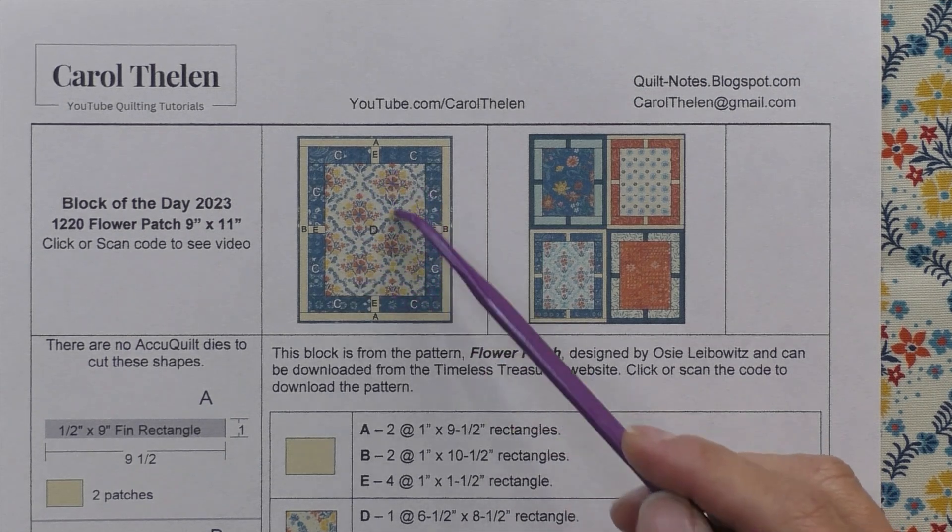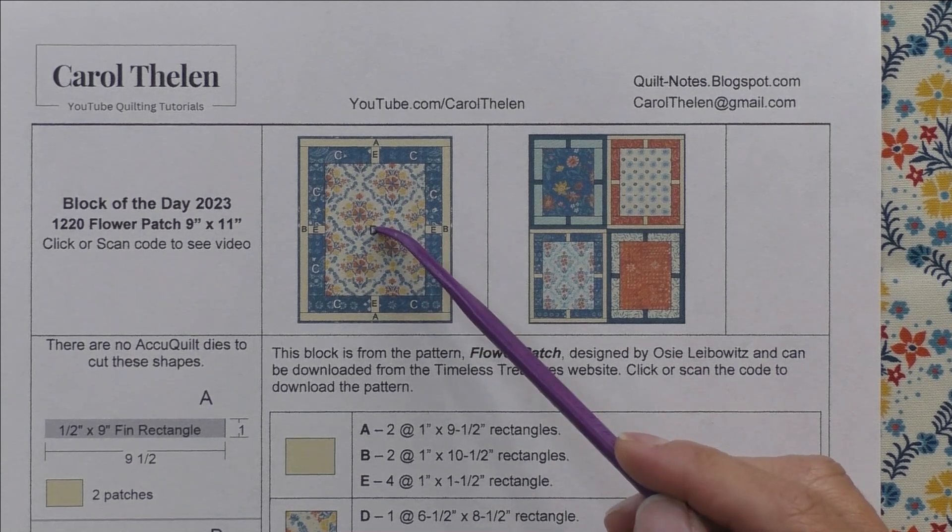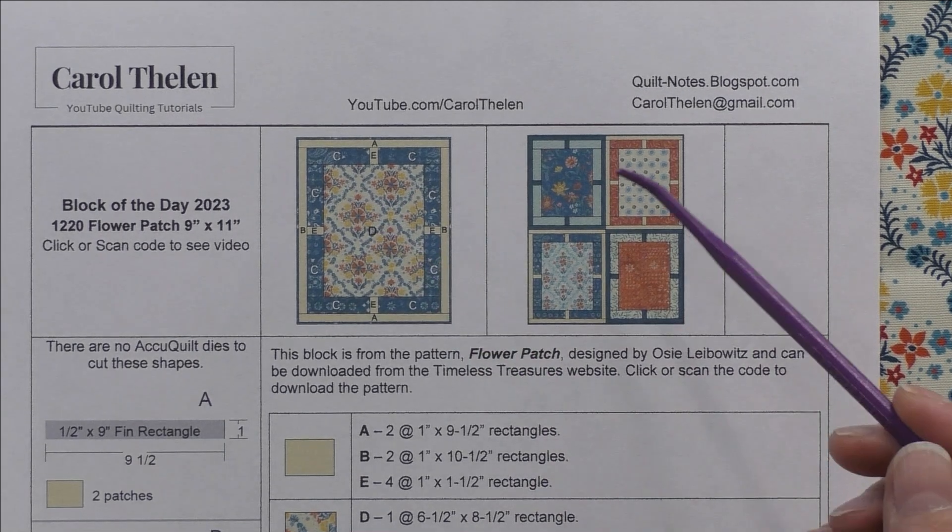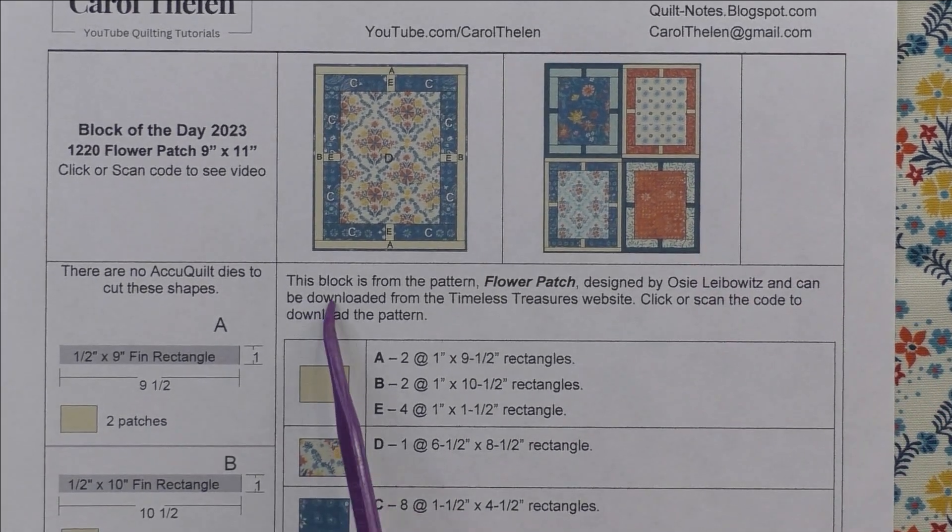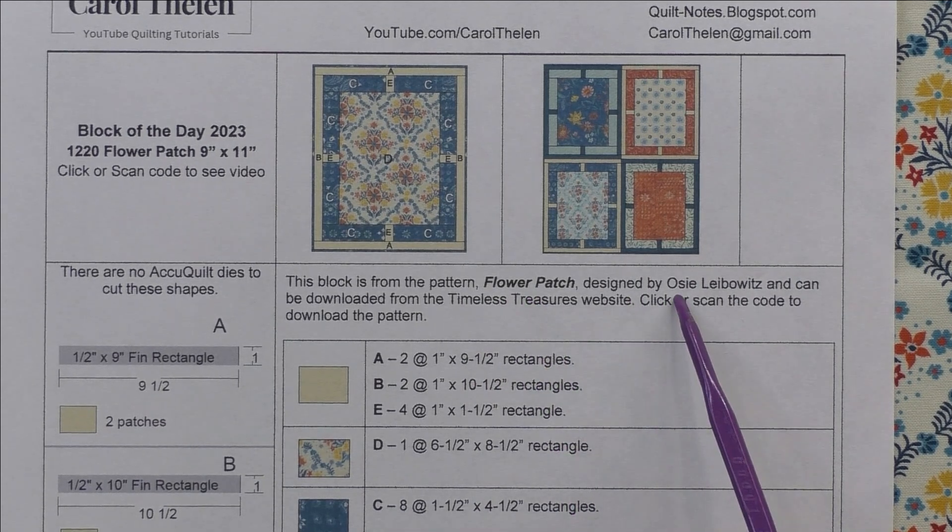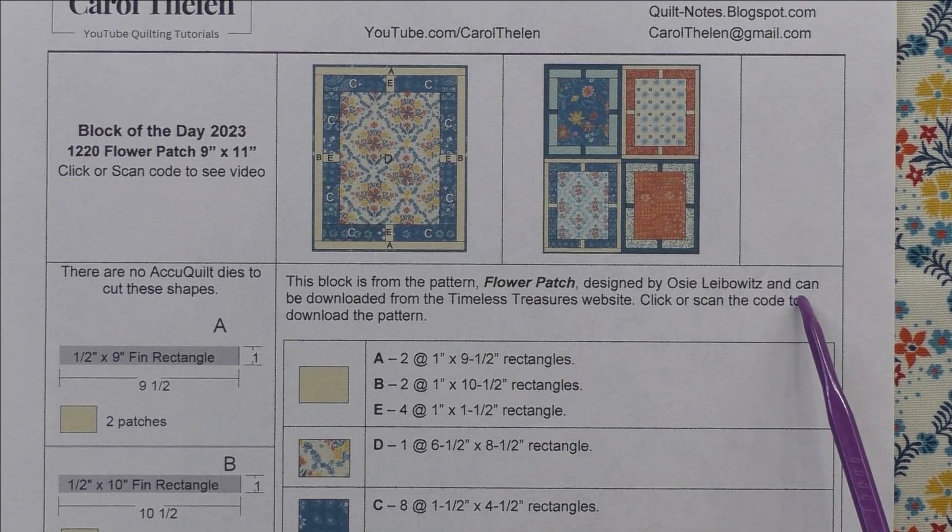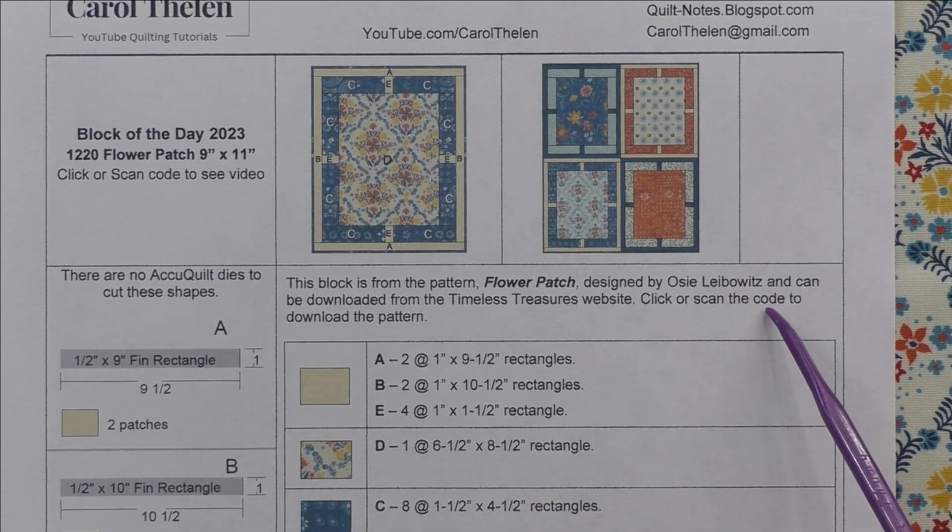This is cut 6.5 by 8.5 inches, so a lot of space to showcase fabrics. Here are four blocks set block to block. This block is a pattern called Flower Patch designed by OC Leibowitz and can be downloaded from the Timeless Treasures website. I will have a code here for you to scan or click to download that pattern.